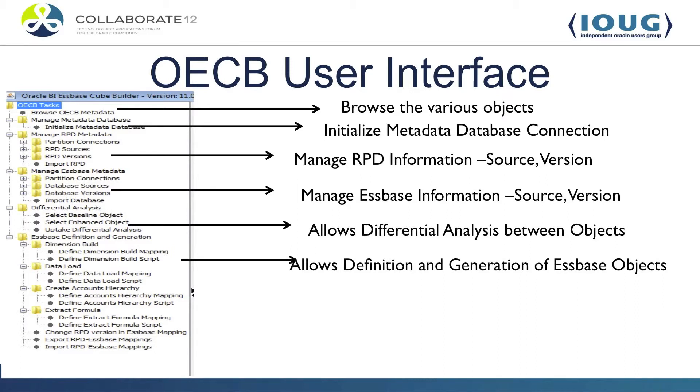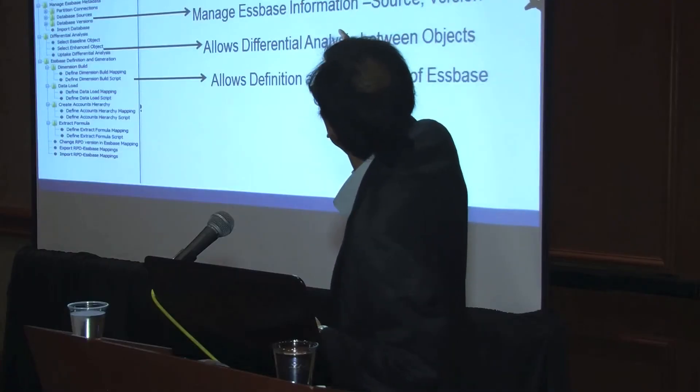The first option on the top left-hand side is 'Browse OECB Metadata.' If you click on that and select an option on the middle screen, it will show you the various objects. During today's session, we talked about how we can use Oracle Essbase Cube Builder to populate Essbase Cubes using the data and metadata which exists in your Oracle BI repository and data warehouse. The most important takeaway is how you can use Oracle Essbase Cube Builder to get data and metadata from your Oracle BI repository and data warehouse and populate your Essbase Cube.